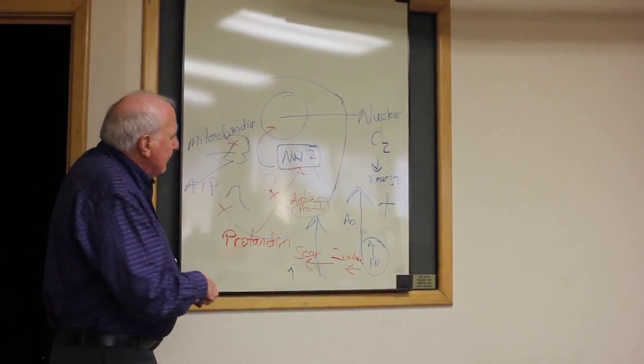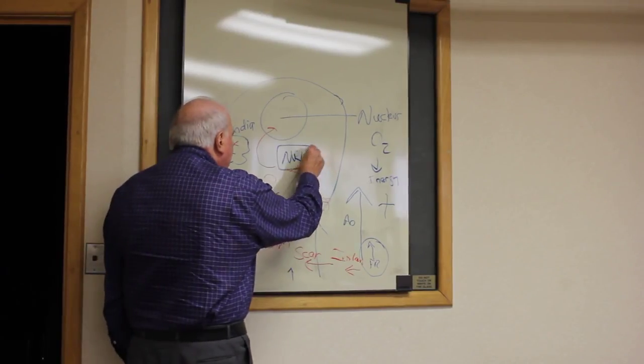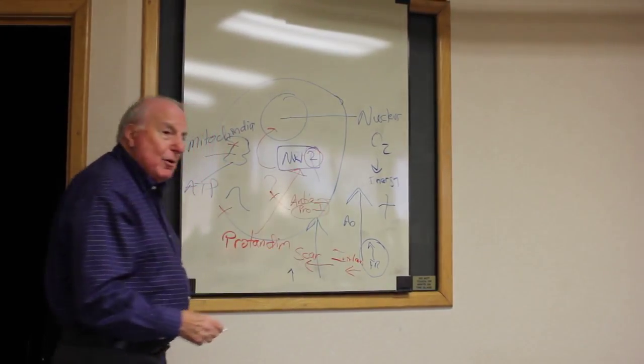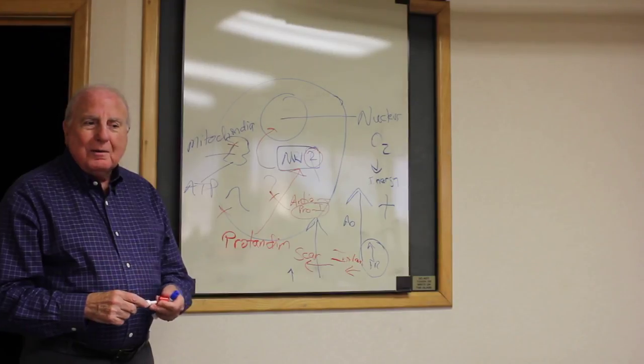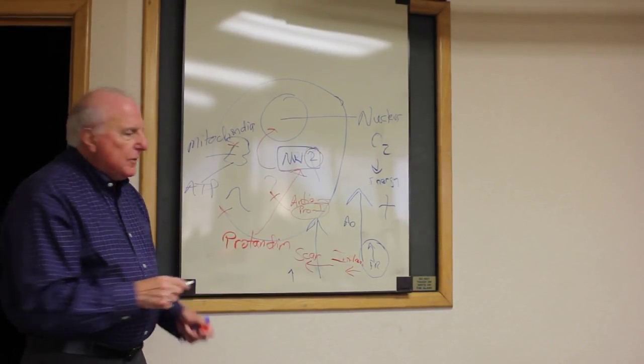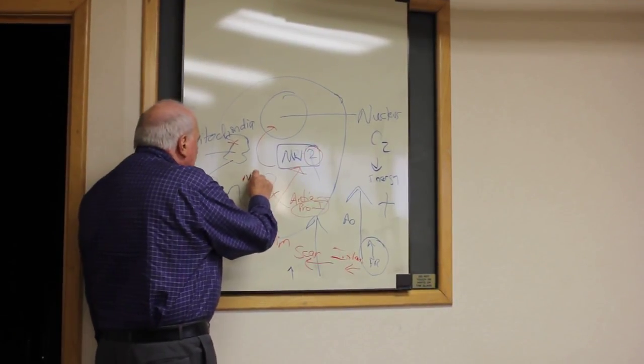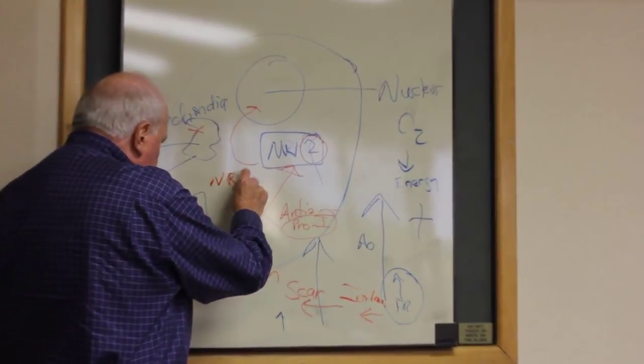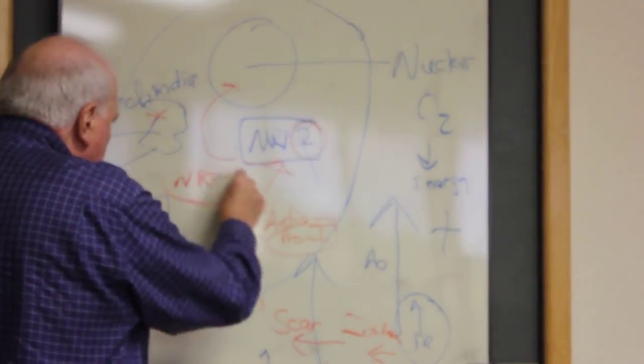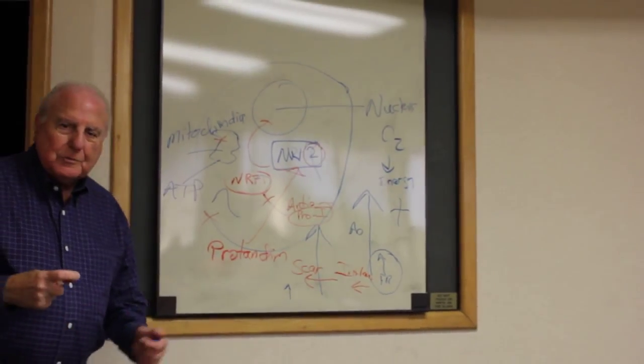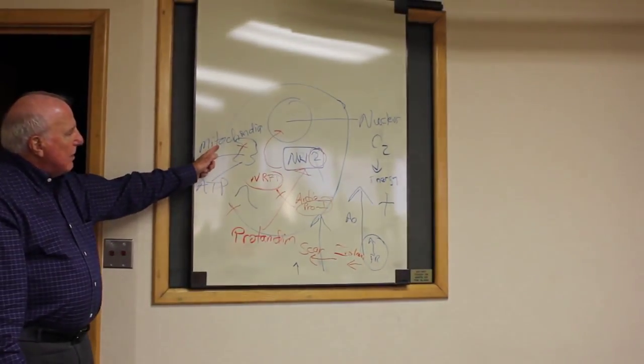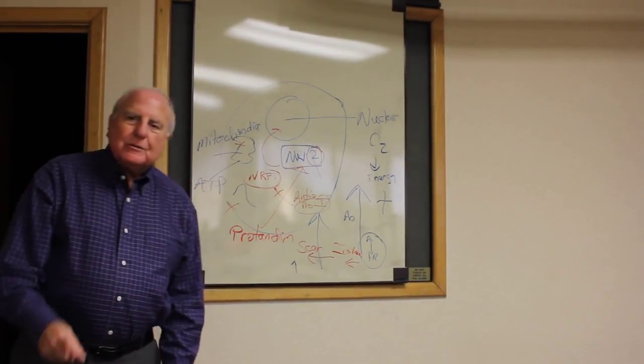Now, focus for a minute on this is called NRF2. Well, if there's a 2, there must be a 1. And there is a 1. And the 1 is another transcription factor. And that factor, NRF1, is a very interesting compound of herbs that activates the mitochondria.